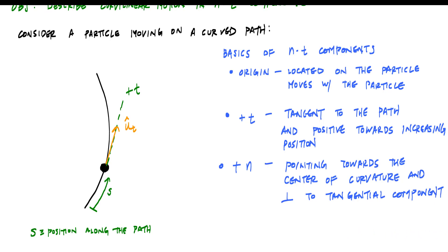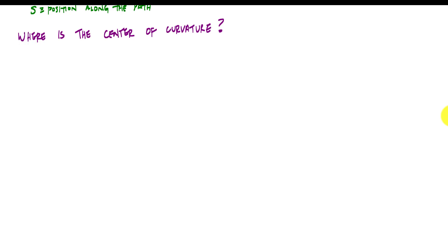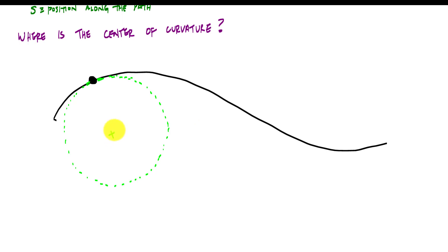The center of curvature is pointing generally to the left in this case, based on the path. That direction is the positive n direction with unit vector u_n-hat. Identifying the positive tangential and normal components is really half the battle. To find the center of curvature, consider a segment of the curved path — this portion of the curve could be described as part of a circle. That segment of the curved path is part of a larger circle, and the center of that circle is the center of curvature.